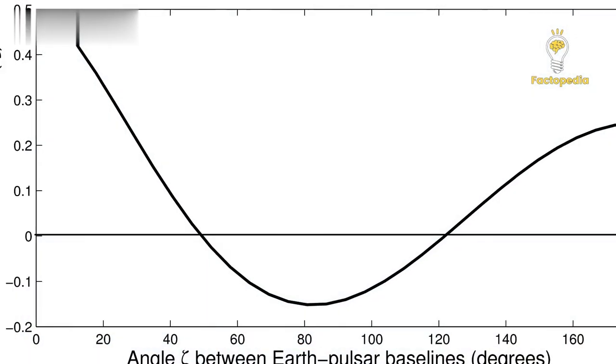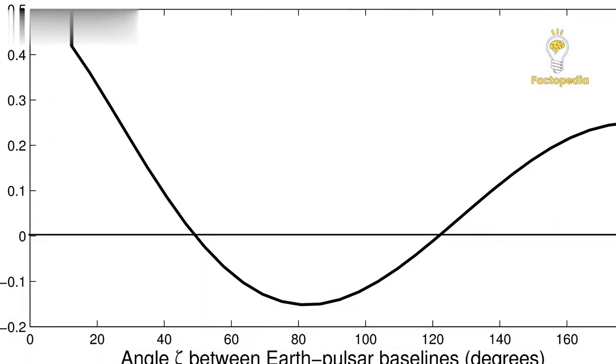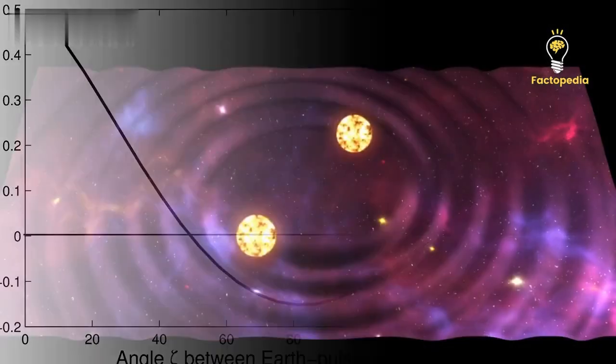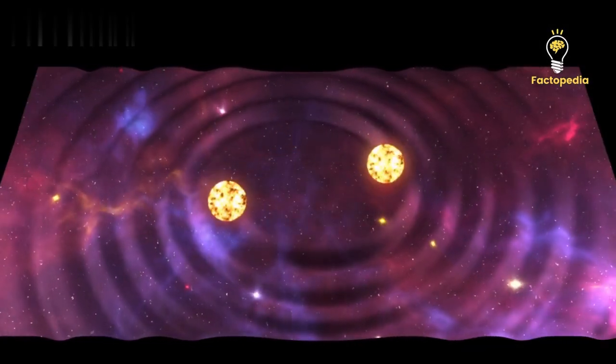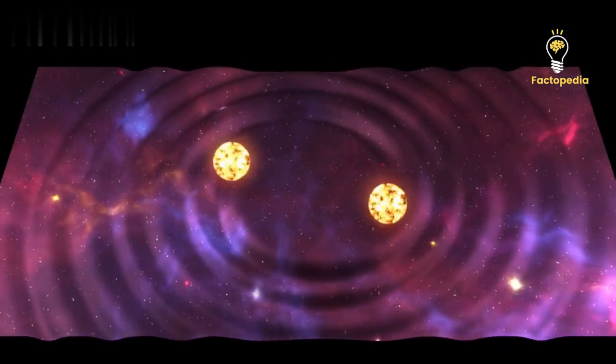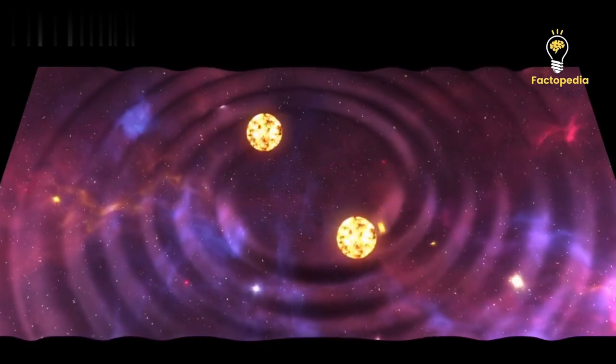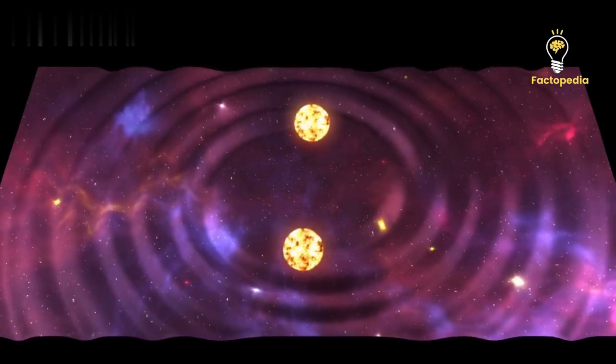And guess what? There was a dip in the curve at around 60 degrees. This dip indicated that the pulsars at this specific angular separation experienced distinct portions of the gravitational wave pattern, leading to a decrease in their correlation.